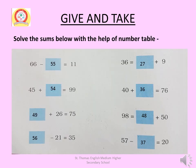Solve the sums below with the help of the number table. First example: 66 minus 55 equals 11. Start from 66, move 5 rows down — 5 rows means 50 — then move 5 steps left. So 66 minus 55 equals 11.